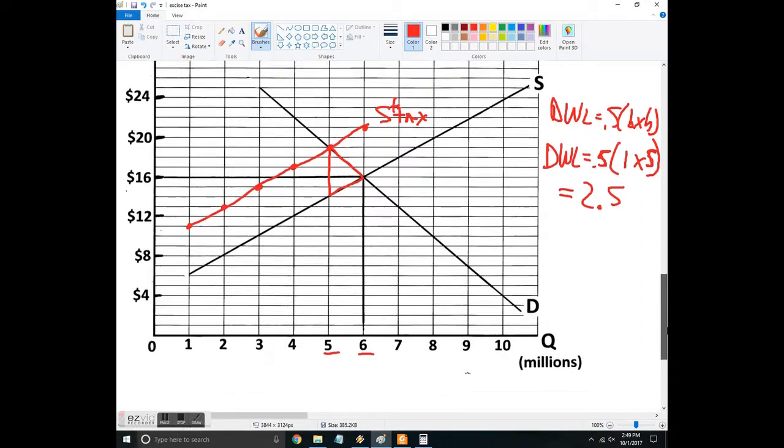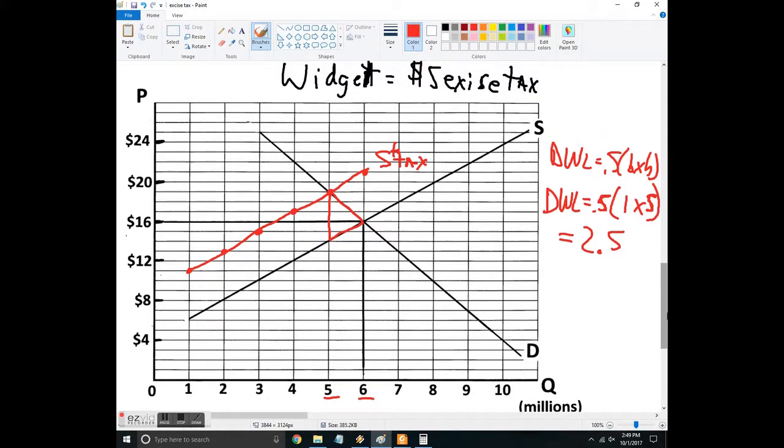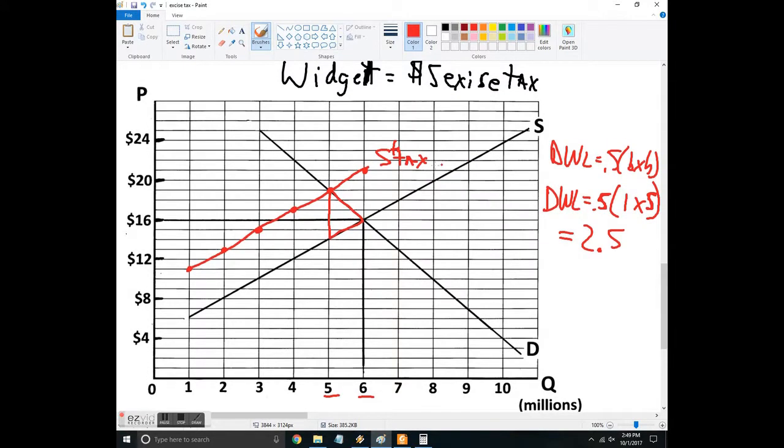And then if you want to figure out the tax revenue, so how much money is the government going to take in, just multiply whatever the equilibrium quantity is. So the quantity, we'll call that Q star times the tax. So it's five and it's really 5 million times this $5 tax. So the government's going to collect 25 million dollars on that with which we hope they use it to clean up whatever the externality problem is.